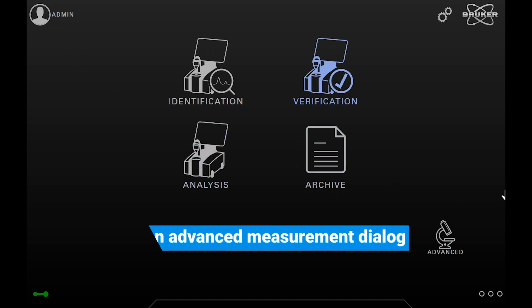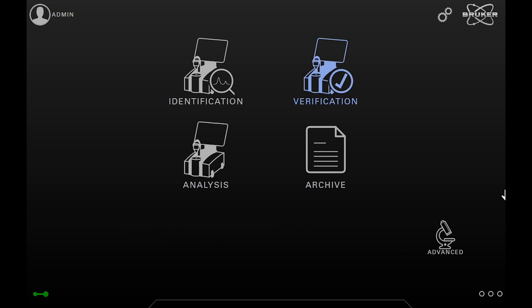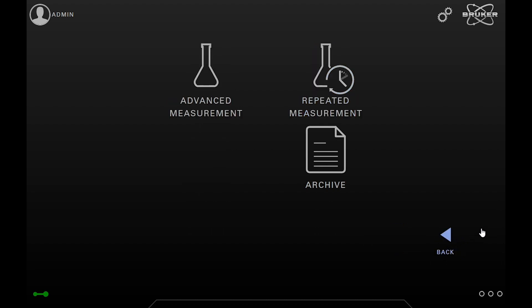Now you can open the Advanced Measurement dialog that is typically located on the second page of a home screen. To get there, use the Advanced button in the lower right corner. Then touch the Advanced Measurement button to open the dialog.